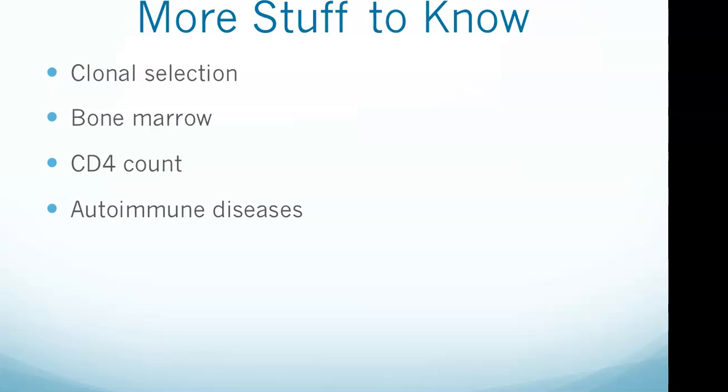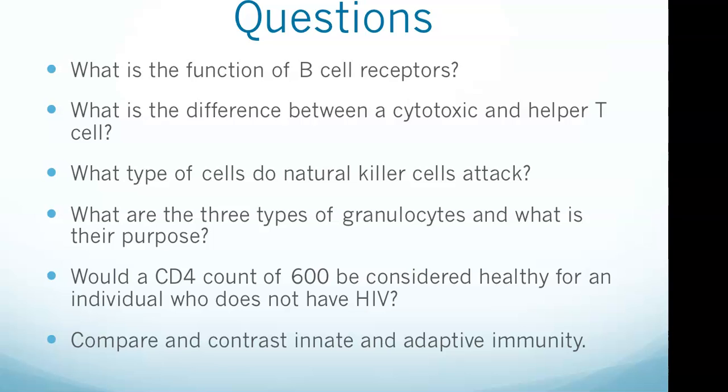The CD4 count is like a snapshot of how well your immune system is functioning. CD4 cells are white blood cells that fight infection - basically the more you have, the better. These are the cells that the HIV virus kills. As HIV infection progresses, the number of these cells declines. When the CD4 count drops below 200 due to advanced HIV disease, a person is diagnosed with AIDS. A normal range for CD4 cells is about 500 to 1500. Would a CD4 count of 600 be considered healthy for an individual who does not have HIV? It would be considered low but still within the range of healthy.